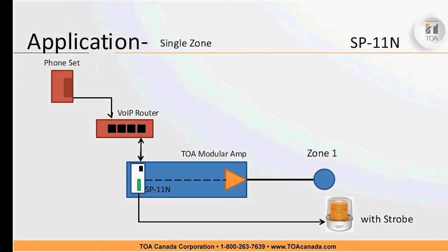For the basic single zone configuration, you have the SIP module in one of the TOA amplifiers passing audio out to your speaker. The open collectors can also be used for other things — for example, in a busy warehouse, you could set up one of the output contacts to provide an in-call signal to set off a strobe light, so when people see the strobe they'll quiet down or pay attention to the page coming through. That's the simplest single zone setup.